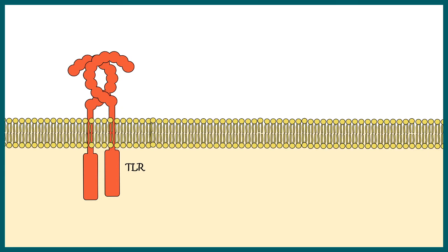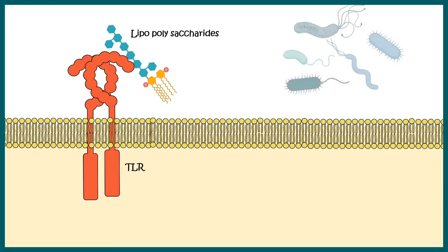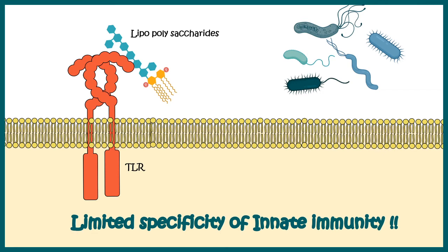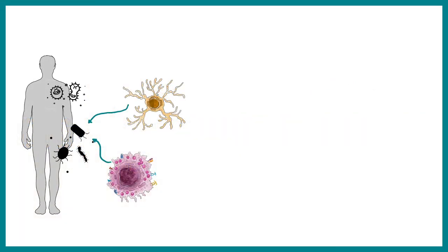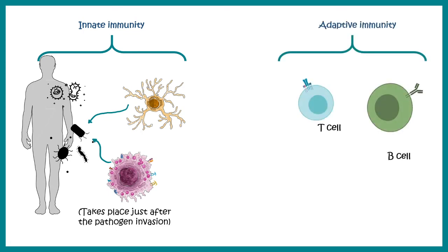The biggest problem with the innate immune system is its limited specificity. For example, TLR4 determines lipopolysaccharides but it cannot tell us which strain of bacteria the lipopolysaccharide is coming from. It can tell that it is coming from a bacterium, but between different strains it cannot discriminate. That is why we need a more specific immune system, which is provided by our adaptive immune system. After recognition of PAMPs, the innate system coordinates with adaptive immune system components, which eventually mount a specific immune response.